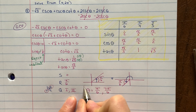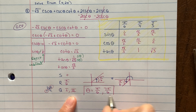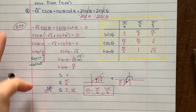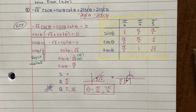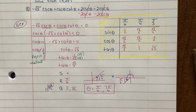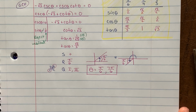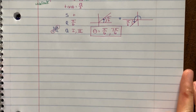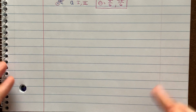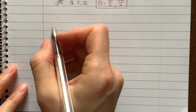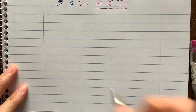So my two answers for question number 4 are π/6 and 7π/6. That was question number 4 from the review sheet, posted on WITS. The next question I want to go over is question number 8 from that review sheet.